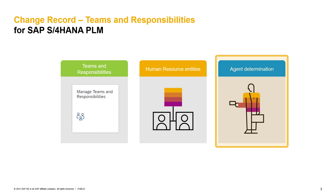I will show you what kind of different agent selections the process route has available. You will see the selections in the change record as well as in the global process route templates app. Let's now jump into the system to have a closer look into the teams and responsibility capabilities of the change record.